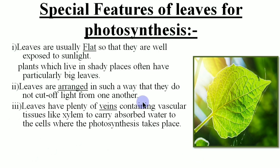Third point leaves have plenty of veins containing vascular tissues. So this is the midrib, these are the veins and the veinlets and they are supplying water to each living cell that contains chlorophyll. So that each living cell containing chlorophyll must be able to carry out the process of photosynthesis.